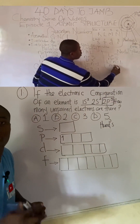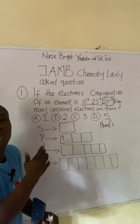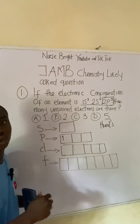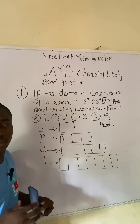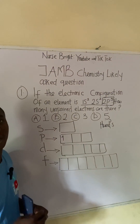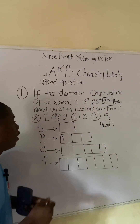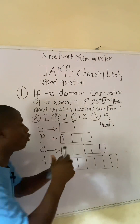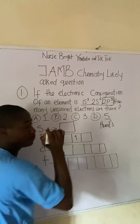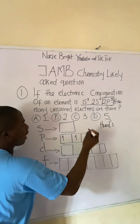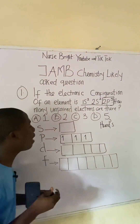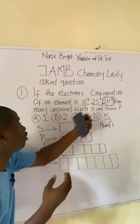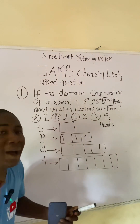I filled in one electron — four remaining. Let's add another one, and another one. Now I've filled in three electrons, with two remaining. Remember, each box takes a maximum of two electrons, so let's continue.